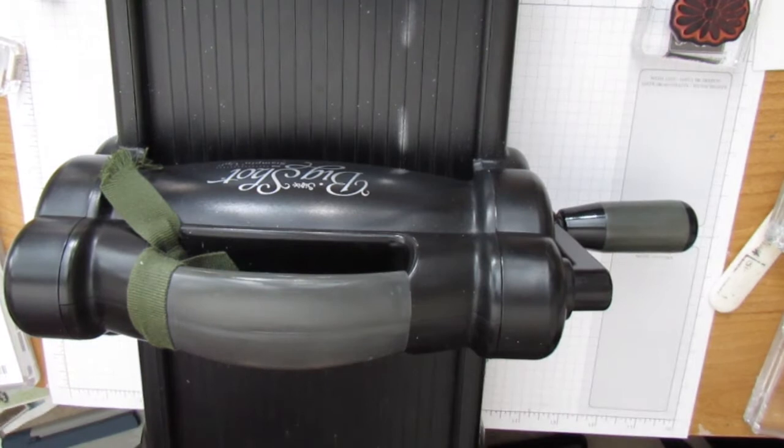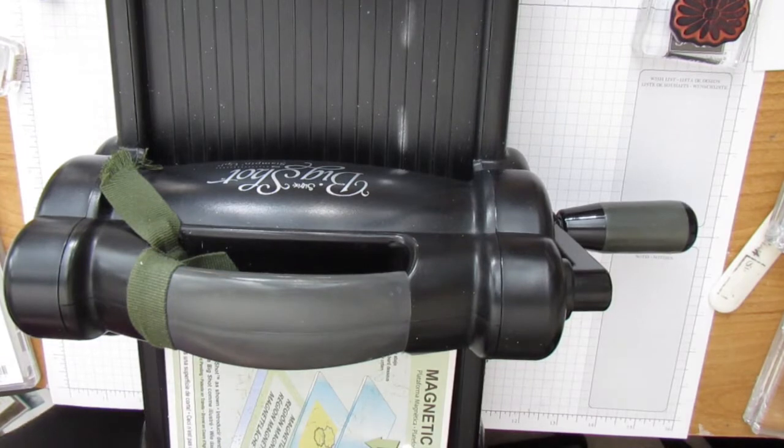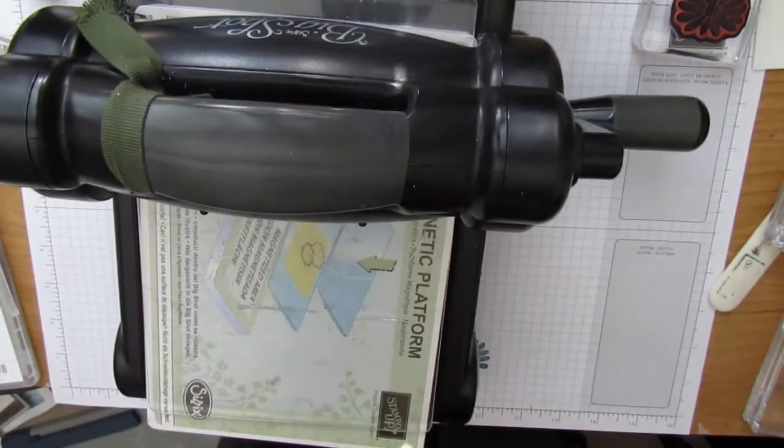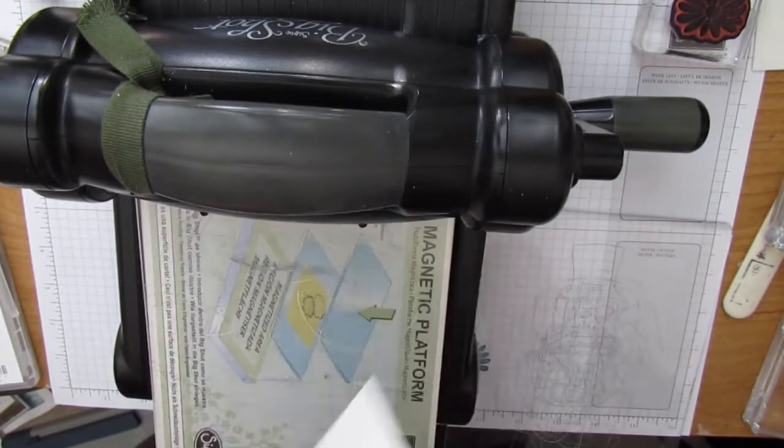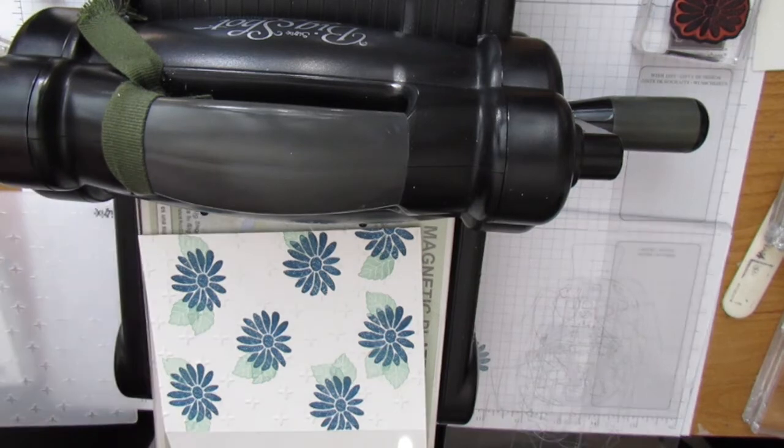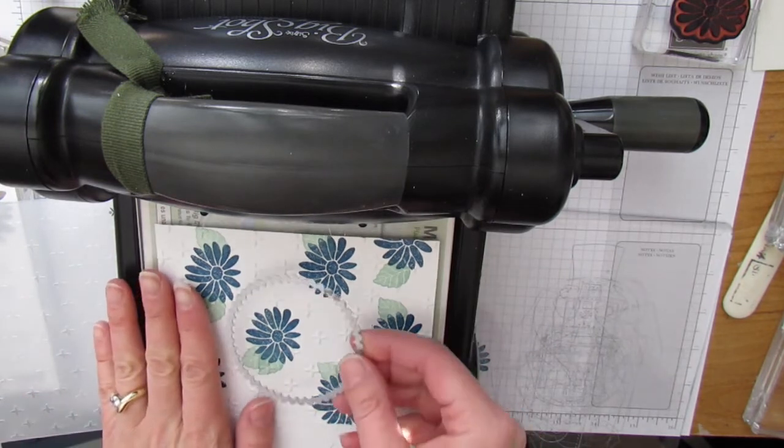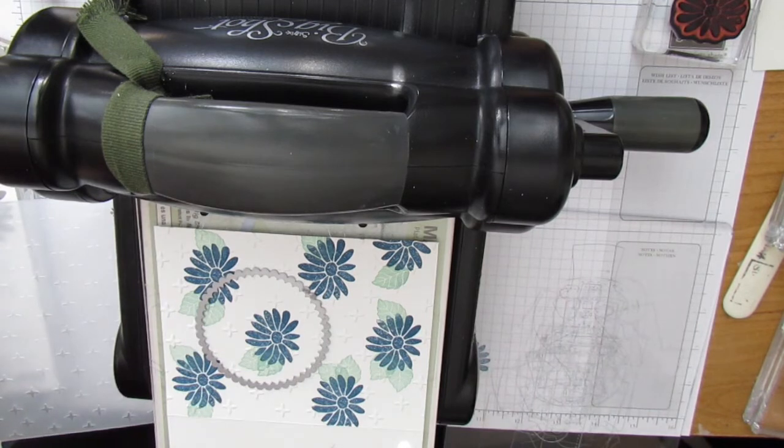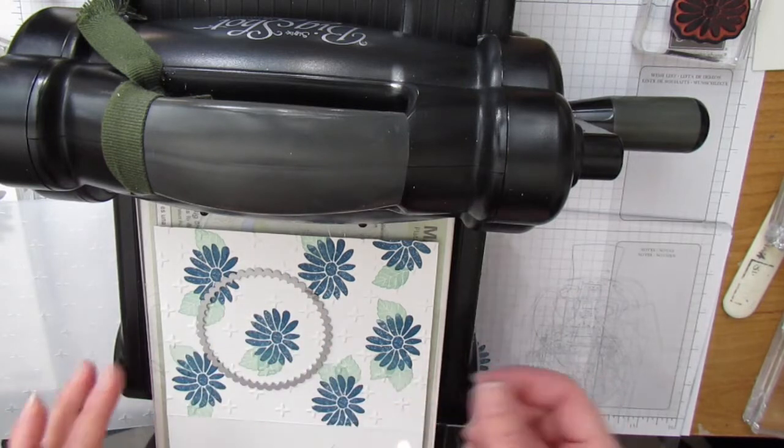Now the next thing I'm going to do is pull in my magnetic plate. I like the magnetic plate because it holds my framelits in place. Move it this way so you can see what I'm doing. I am using the top of my card. I am using a scallop shape from the scalloped oval or the layering circle dies. I like the layering circle dies because it comes with the circle shapes and the coordinating scallop circle shapes.